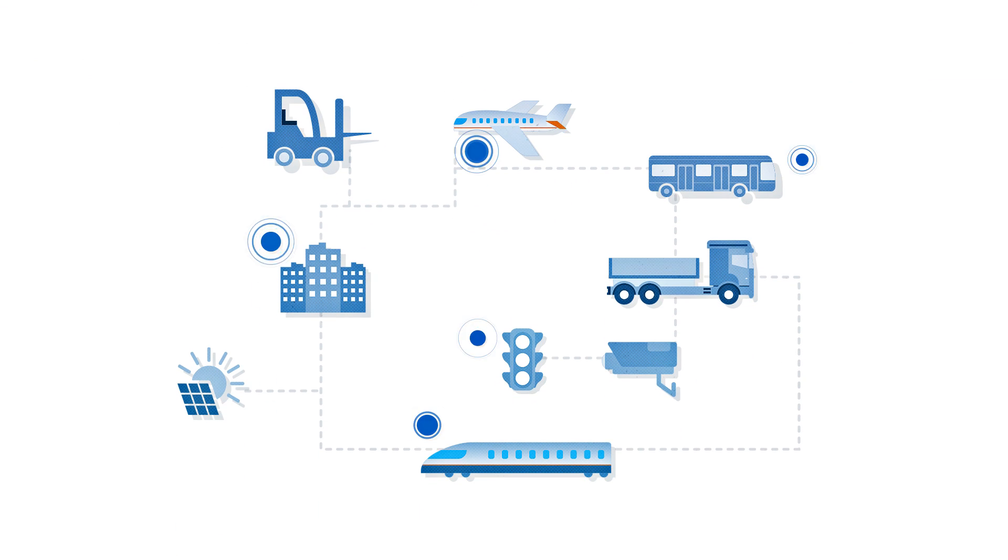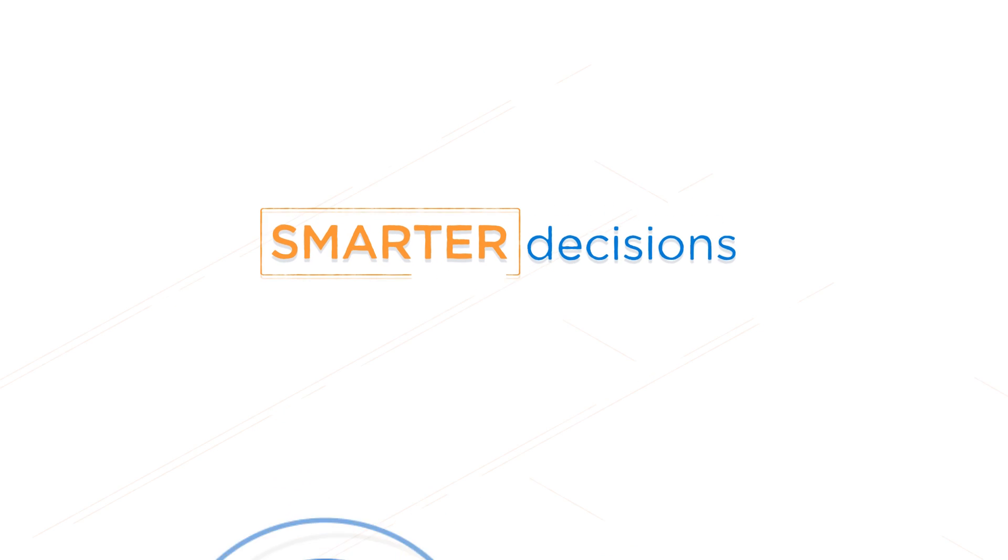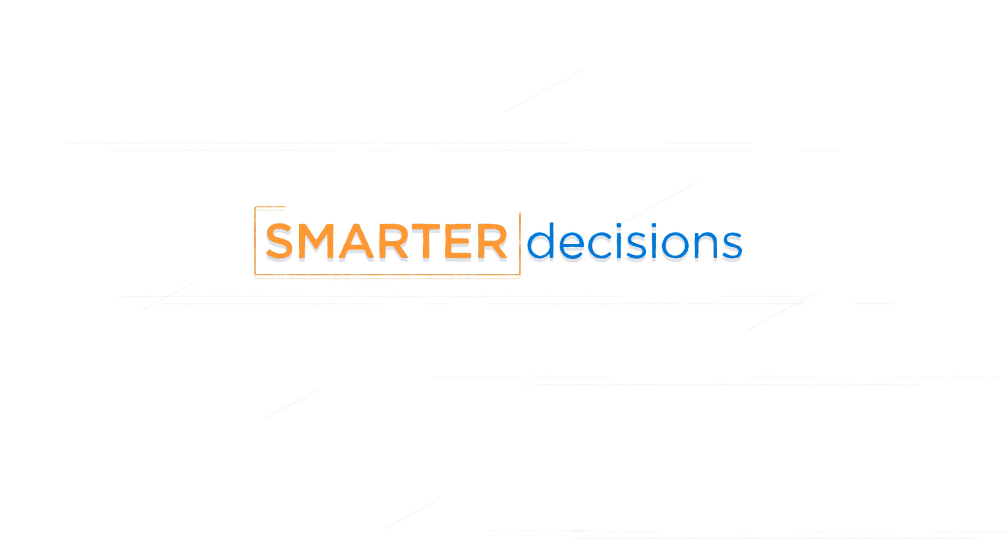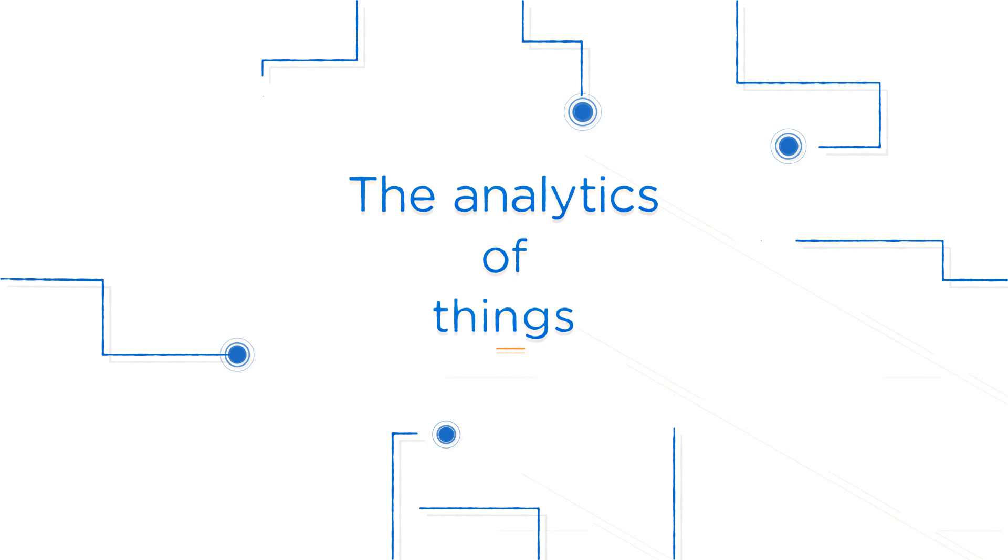It's how all these millions of things actually result in smarter decisions. So how do we make that happen? How do we build the analytics of things?